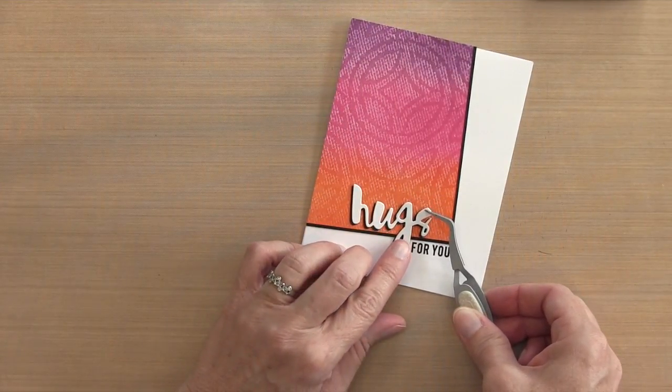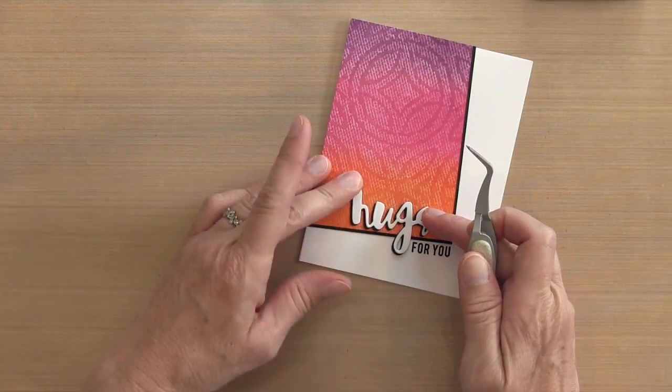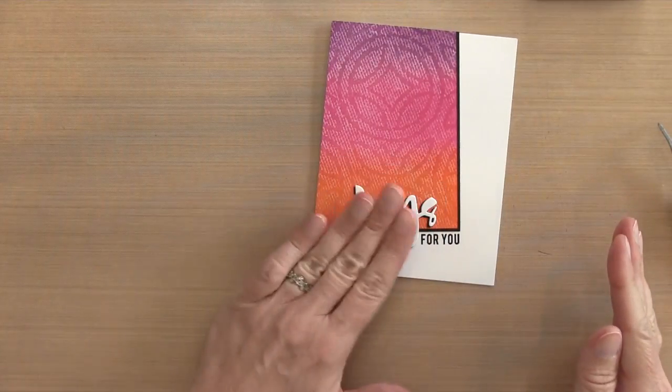And then I'll put some two-way glue on the back of the hugs, which is now black, and place it right there so that the G is hanging down right in front of the 'for you,' so it sort of connects these two words together. I'm just going to press those down until it's adhered.